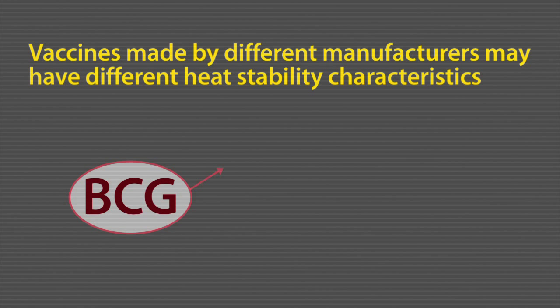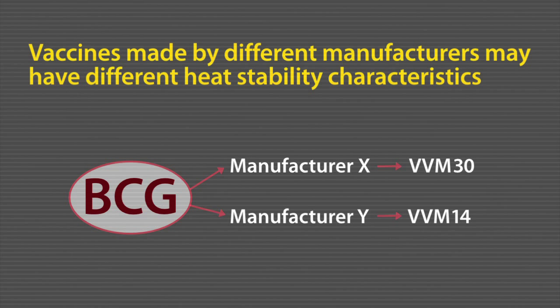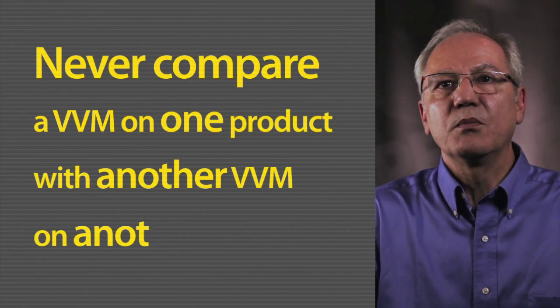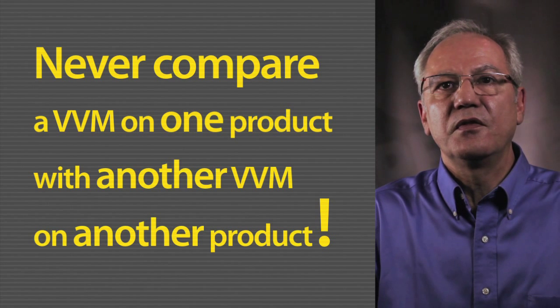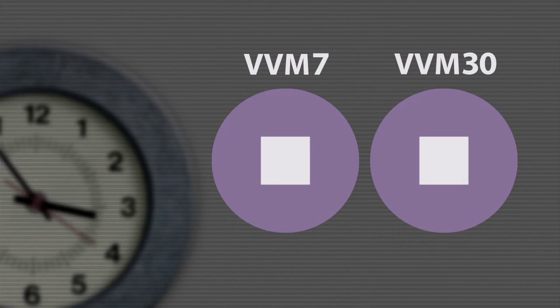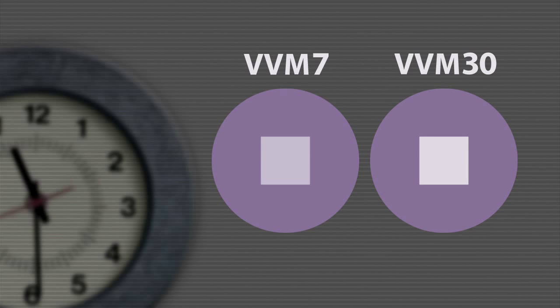A BCG made by manufacturer X might use a VVM30 while a BCG made by manufacturer Y might need a VVM14. Since the VVM reaction rates differ by category, a VVM on one product should never be compared to another VVM on another product. For example, VVM7 reacts 4.3 times faster than the VVM30 under the same temperature conditions. VVM should only be compared within the same type of vaccine coming from the same manufacturer.